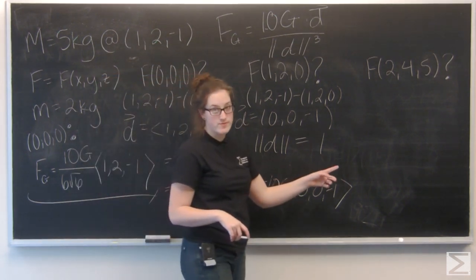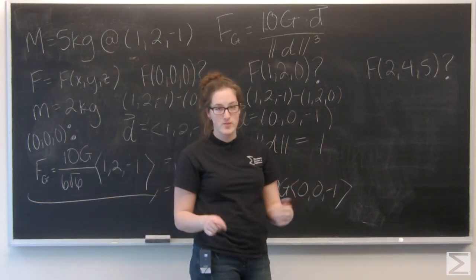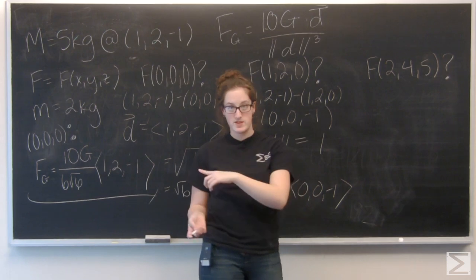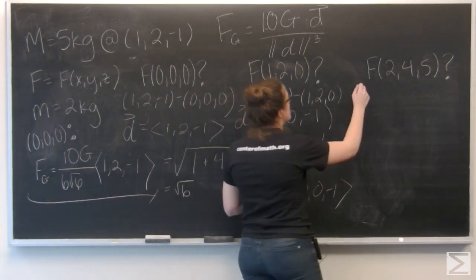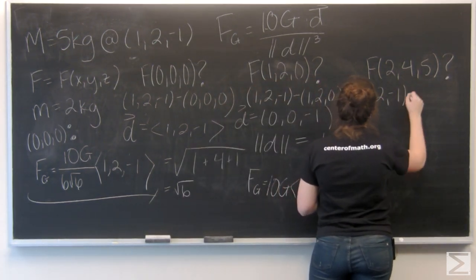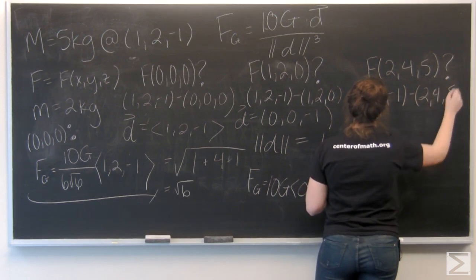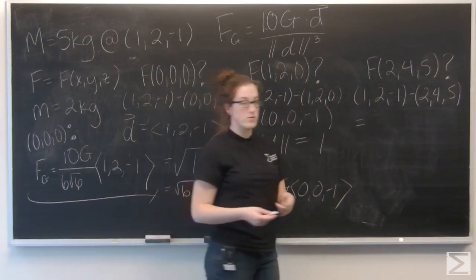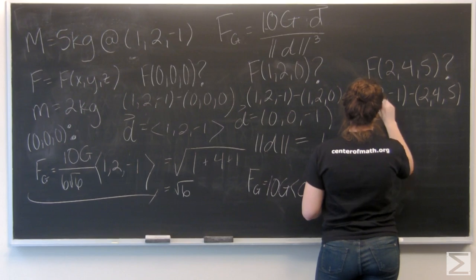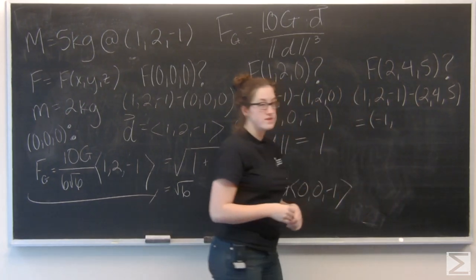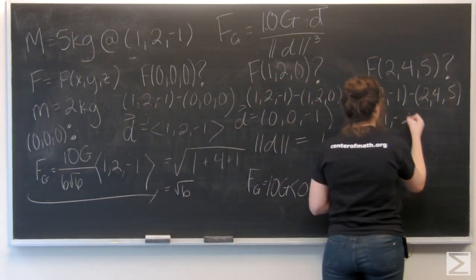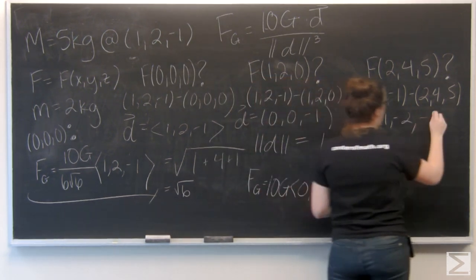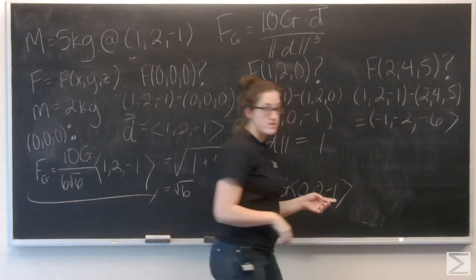Now let's do (2, 4, 5). Again, start out the same way. Subtract this position from the position of M. So I have 1 minus 2, which is going to give me -1. 2 minus 4, which gives me -2. And -1 minus 5, which is going to give me -6. Now let's go ahead and find this magnitude.